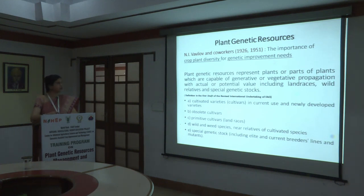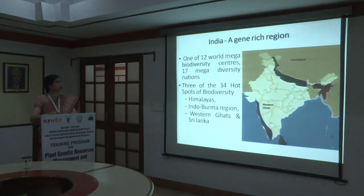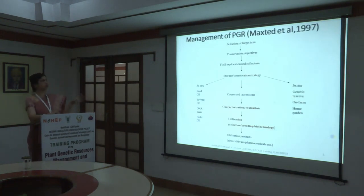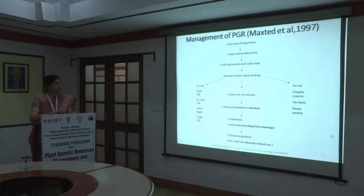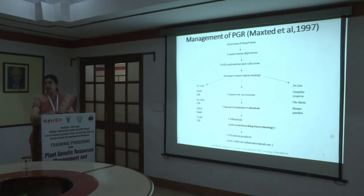Plant genetic resources include cultivated varieties, obsolete cultivars, primitive cultivars, wild and weedy species, and special genetic stocks. Three out of 34 hotspots of biodiversity are in India — the Himalayas, the Indo-Burma region, and the Western Ghats and Sri Lanka. Management of plant genetic resources, as given by Maxted in 1997, involves selection of target taxa, collection with conservation objectives, field exploration, and different conservation and storage strategies ex situ and in situ. After conservation, accessions are characterized and evaluated for use in breeding and biotechnological techniques. It is in characterization, evaluation, and utilization that we use genomic tools.